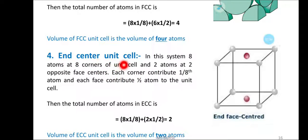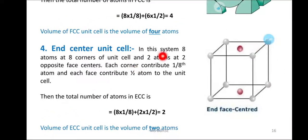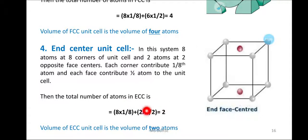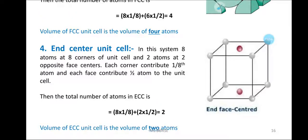We can also calculate the number of atoms in the end-centered unit cell (ECC). In this unit cell there are 8 atoms at the 8 corners and 2 atoms at the 2 opposite face centers. Corners contribute 1/8 and faces contribute 1/2 of the atom to the unit cell. Therefore, the total number of atoms in the ECC unit cell is 2, and the volume of the ECC unit cell is the volume of 2 atoms.